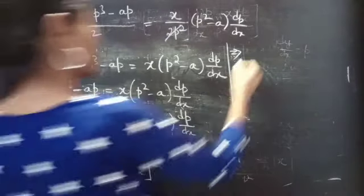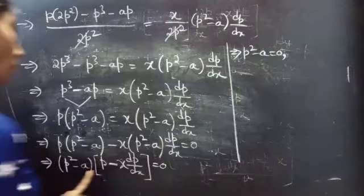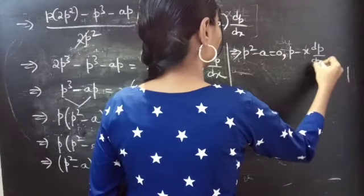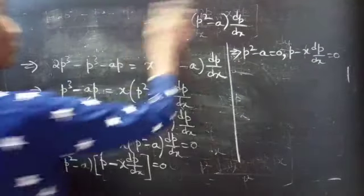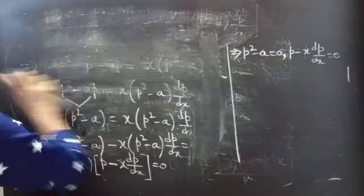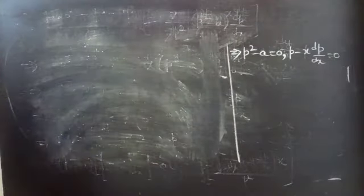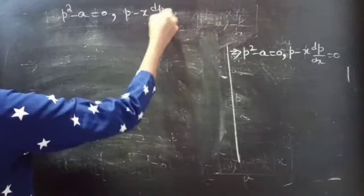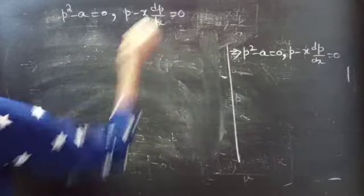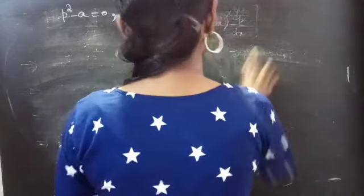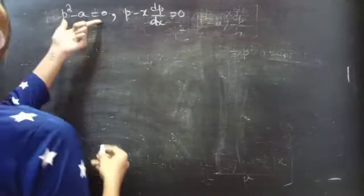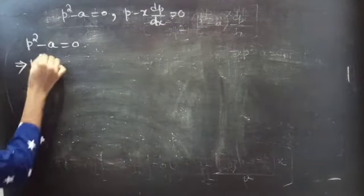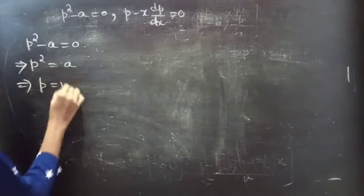This gives us two equations: p² minus a equals 0, and p minus x into dp/dx equals 0. From the first equation, p² equals a, so p equals square root of a.